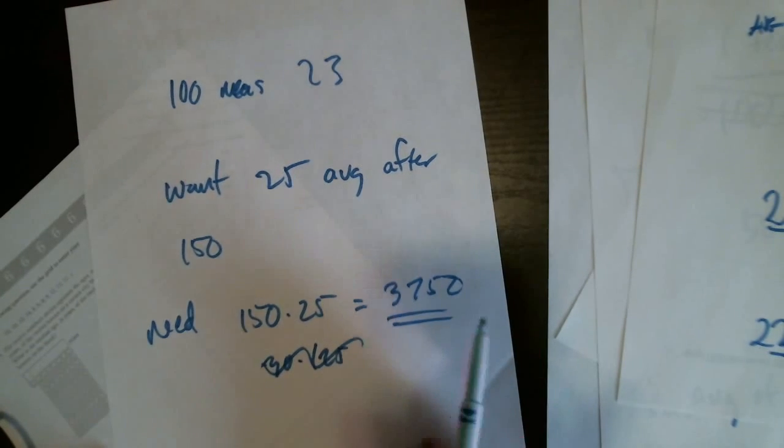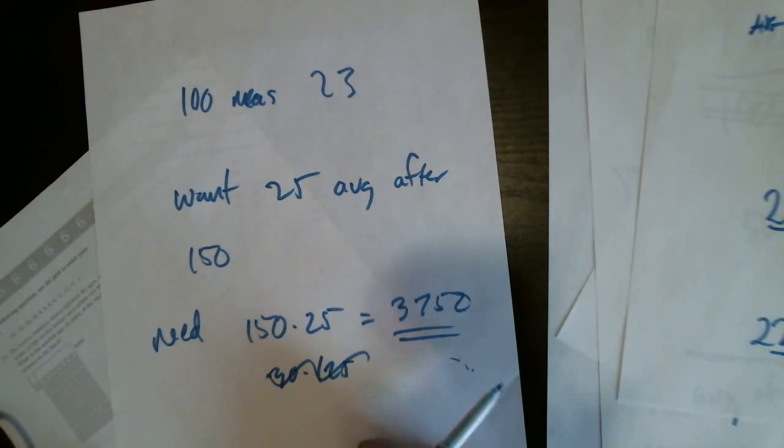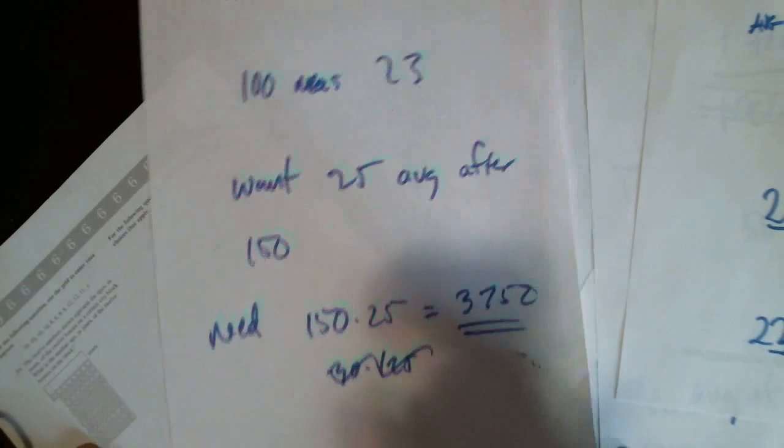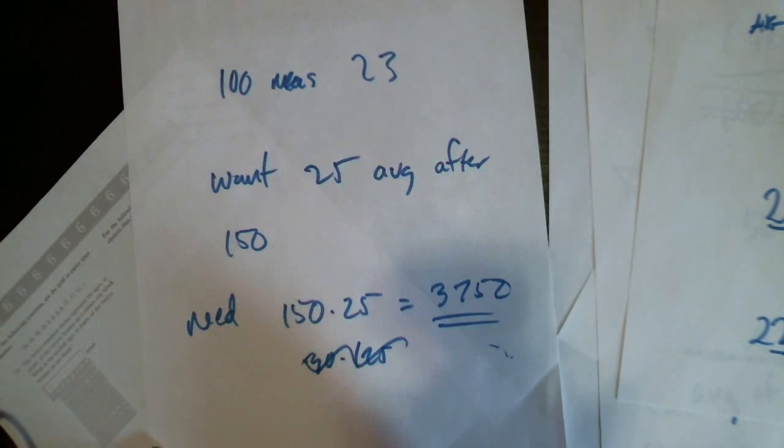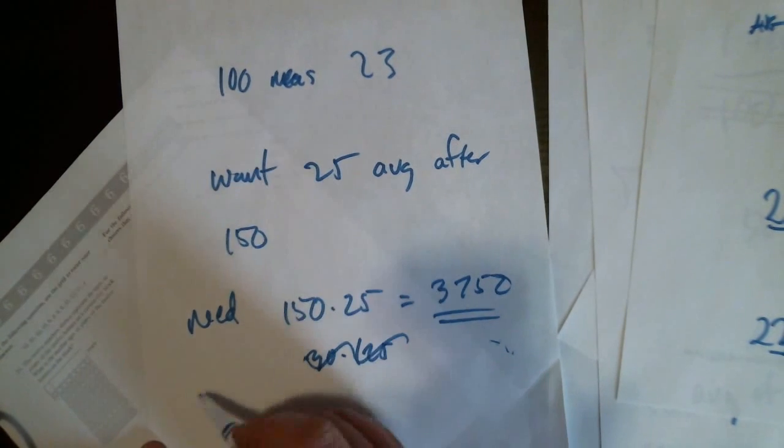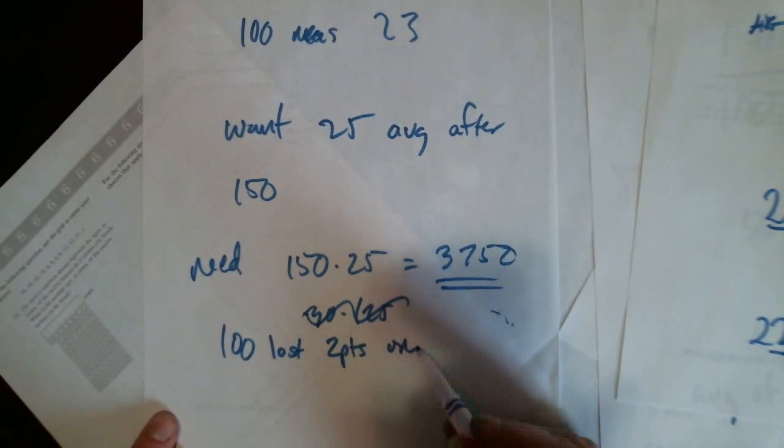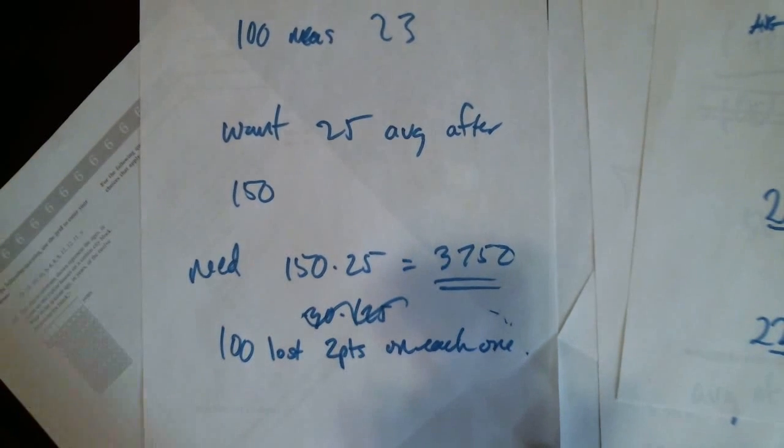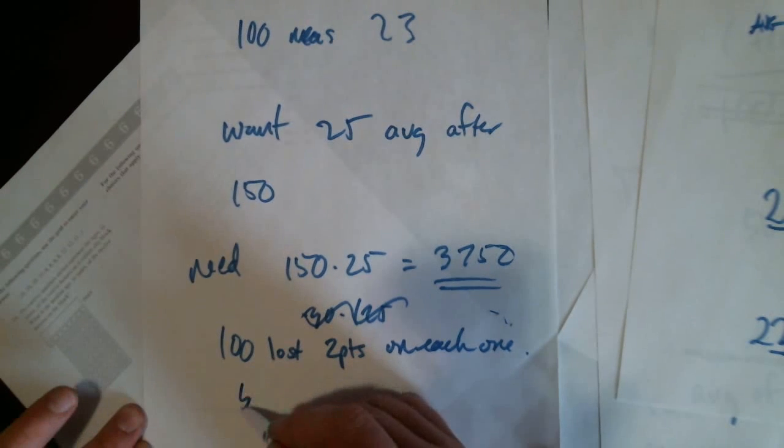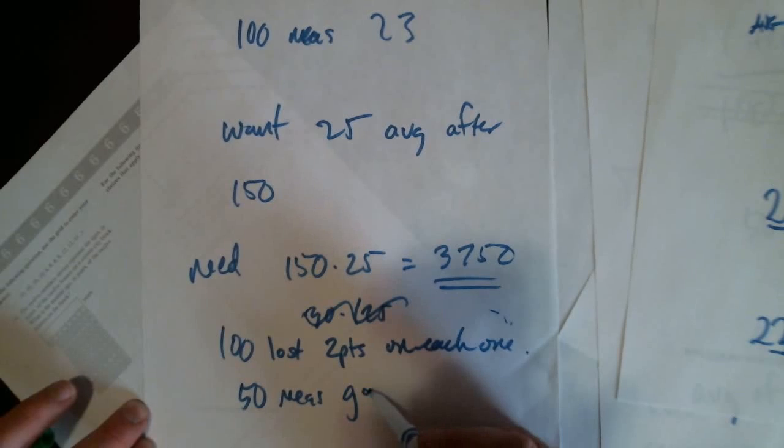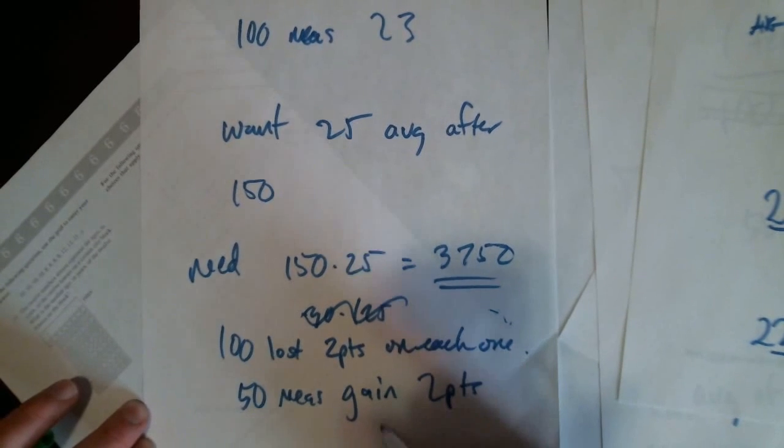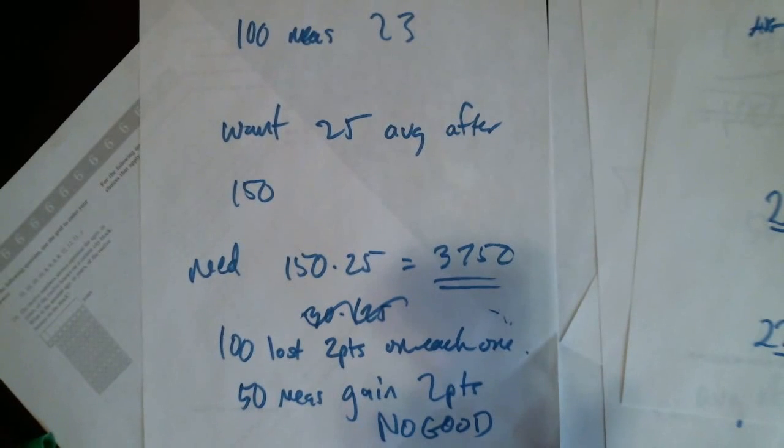So you need to get three-seven-fifty as your target. But really, what I want to think about is you've had a hundred measurements and you've lost two points. You've got to gain all those points back and you've only got fifty more measurements to do them. You're not going to get there by only gaining two points each time. Right? So fifty measurements where you're gaining... no good. Got it. It wouldn't work.